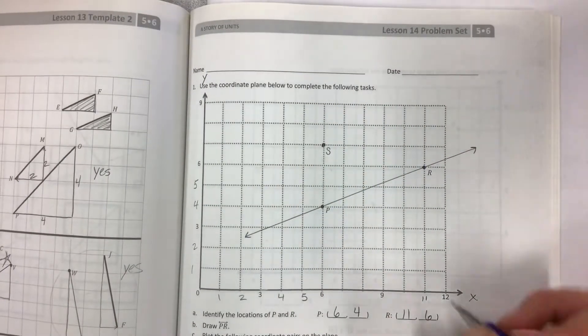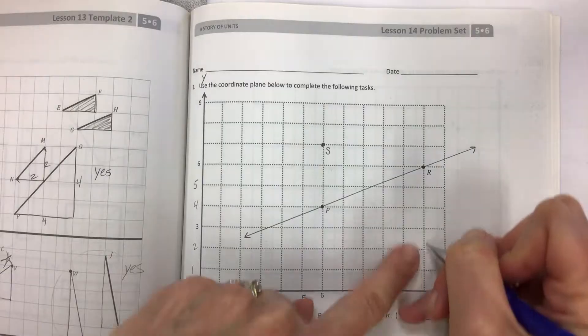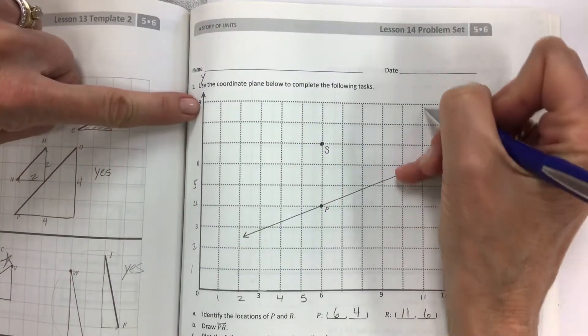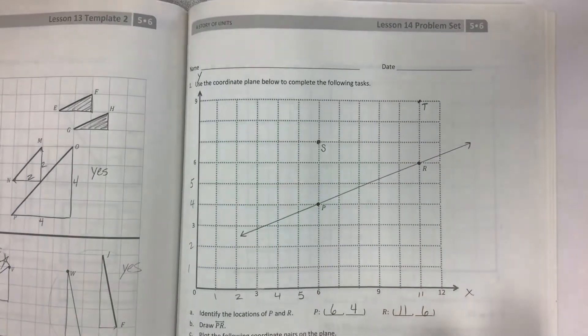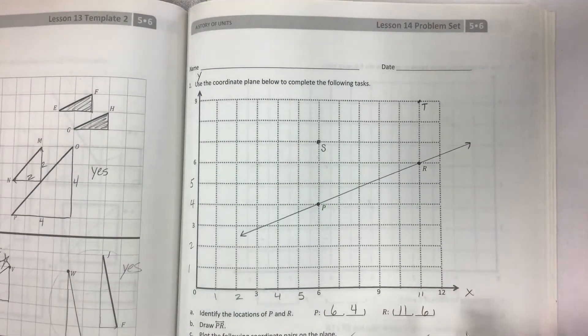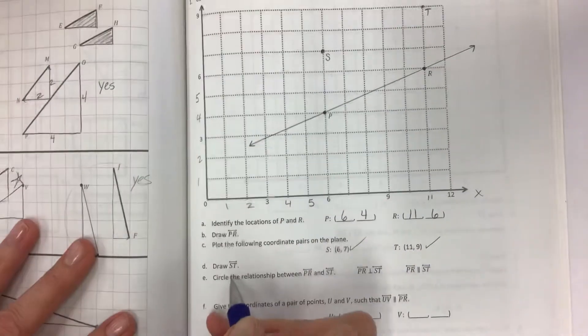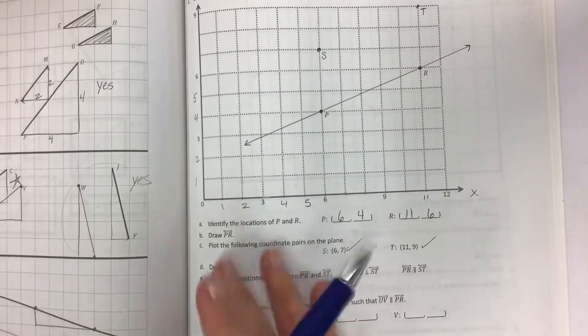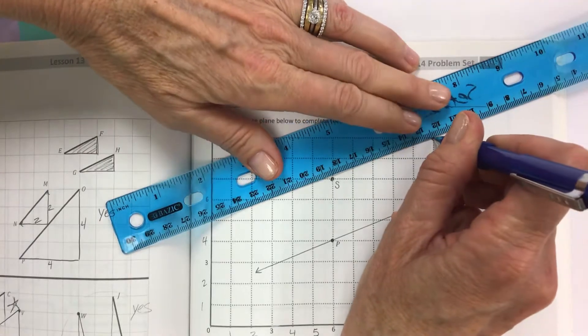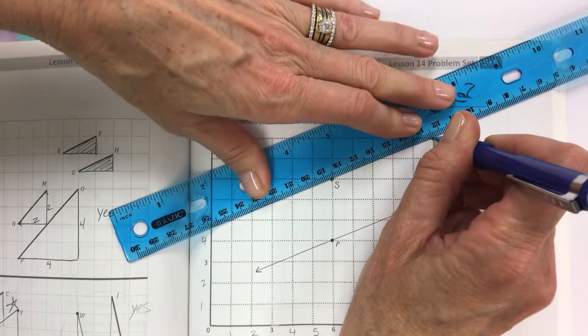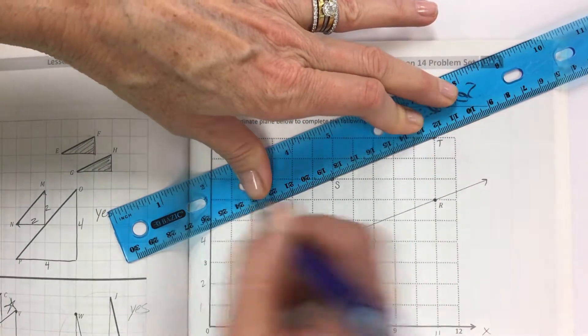Plot this one, 11, 9. Here's 11. We're going to go up but we need to go to 9. That's at the very top for point T. Okay, did both points. Now draw line ST. So put your lead there and then draw your line.